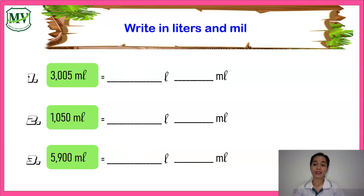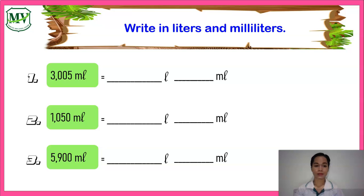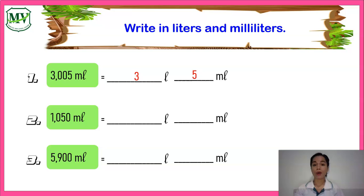Next, let us convert the following volumes into liters and milliliters. Again, there are three items. Let's start with number one: three thousand five milliliters. The correct answer for number one is three liters and five milliliters. Number two: one thousand nine hundred milliliters.